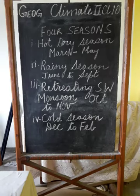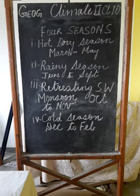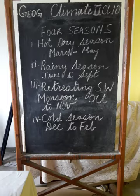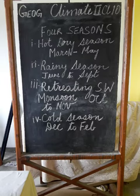Good morning children, this is the second video on Climate for Class 10. I begin here with the four seasons: the hot dry season from March to May, the rainy season from June to September, the season of the retreating southwest monsoon from October to November, and the cold season from December to February.